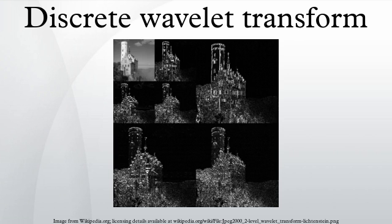In its simplest form, the DWT is remarkably easy to compute. The Haar wavelet can be implemented in Java. Complete Java code for 1D and 2D DWT using Haar, Daubechies, coiflet, and Legendre wavelets is available from the open source project JWAVE. Furthermore, a fast lifting implementation of the discrete orthogonal 9/7 wavelet transform in C, used in the JPEG 2000 image compression standard, is also available.